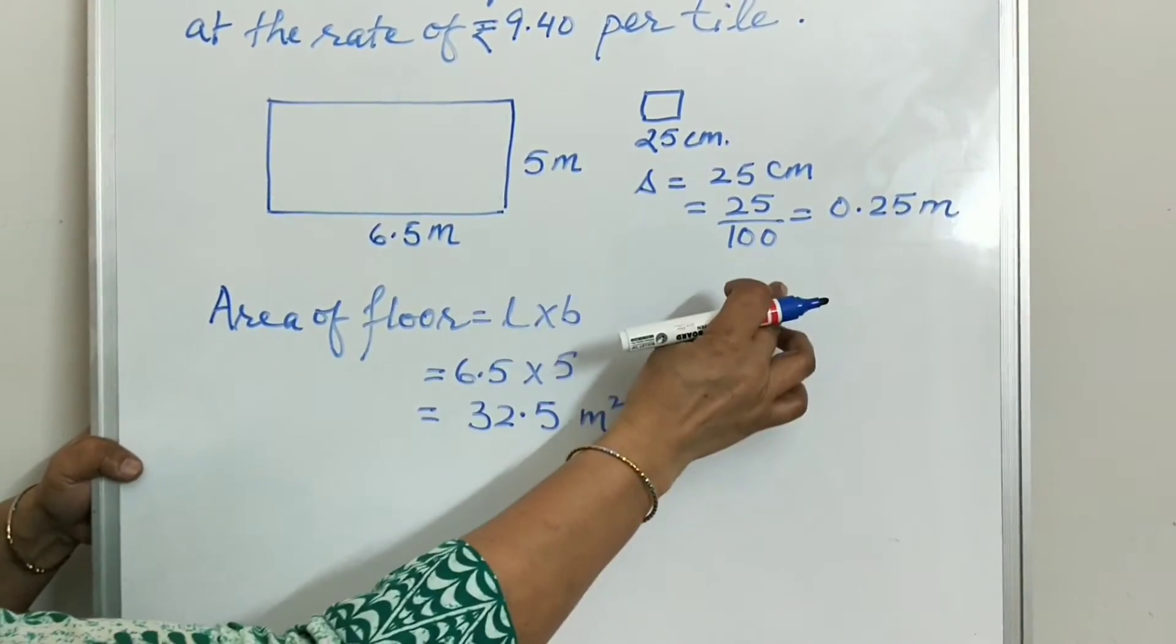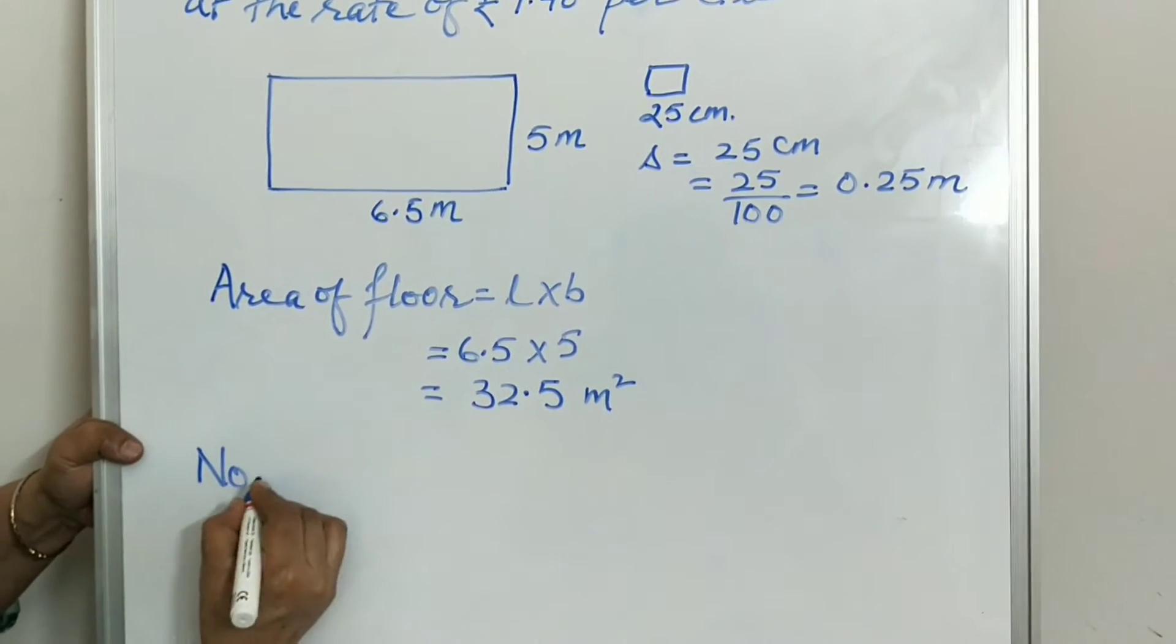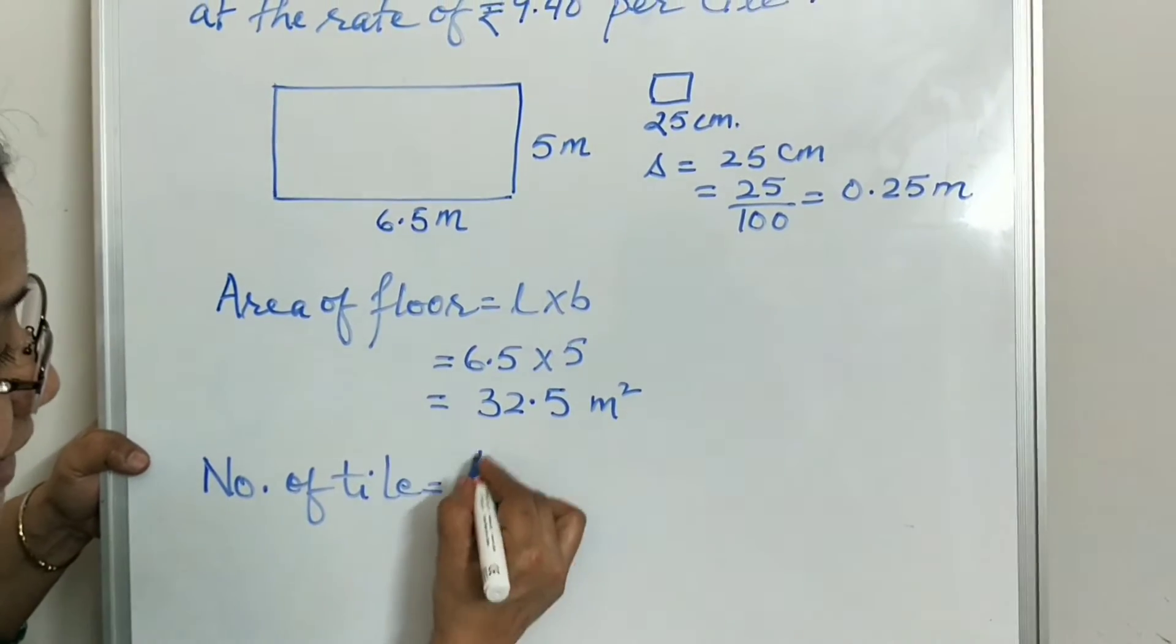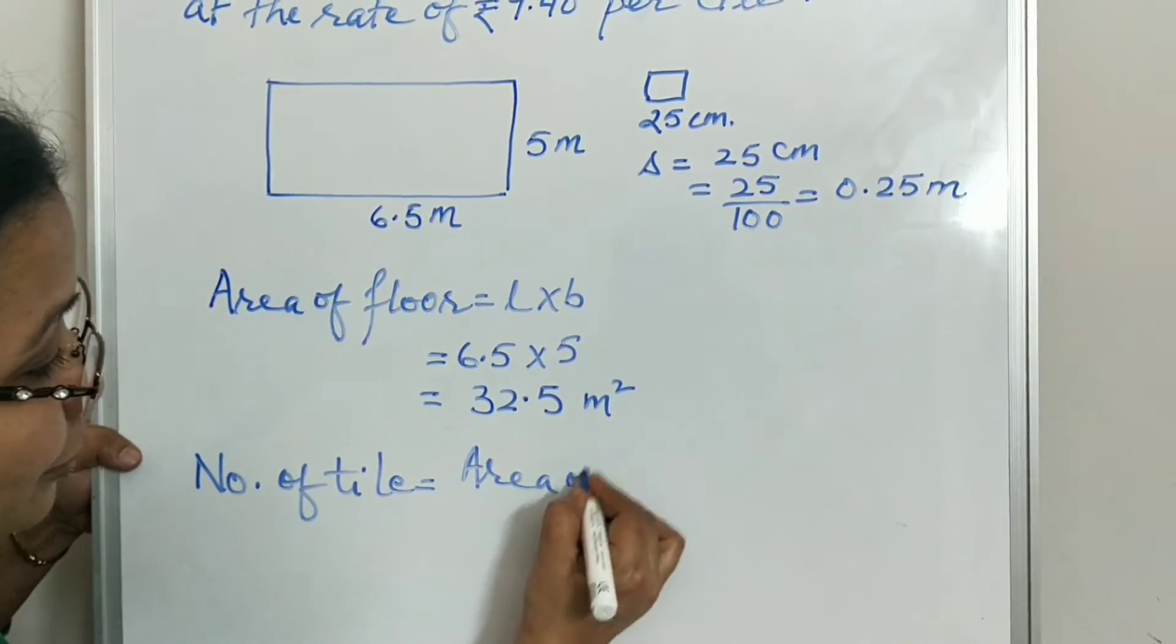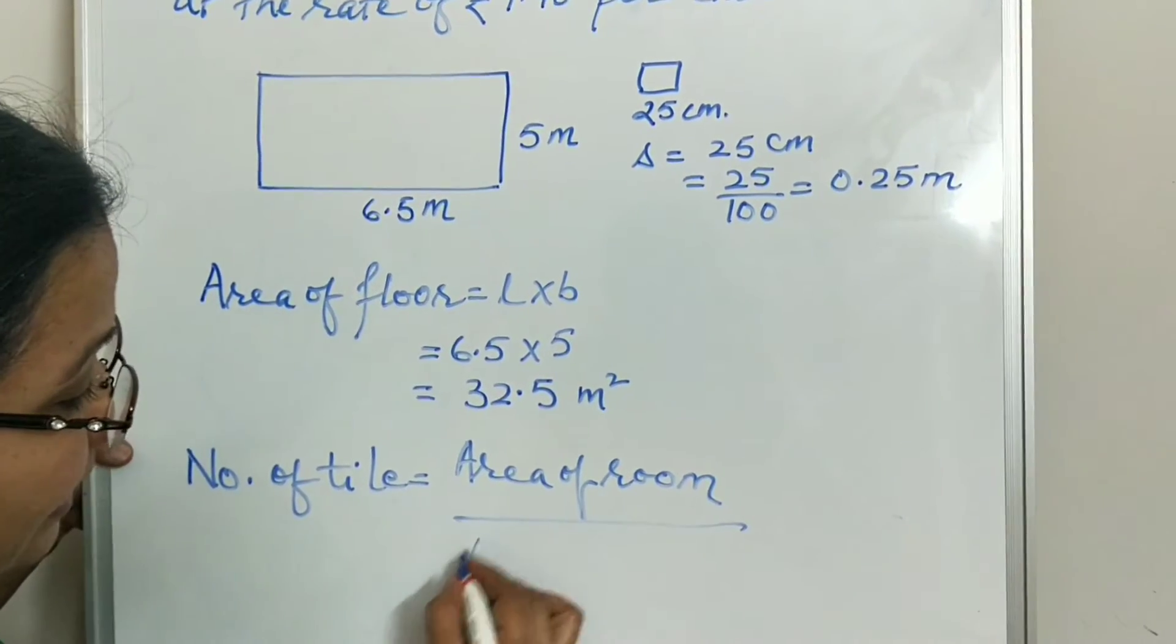We have converted the square's side to meters. So for number of tiles, what will we do? Number of tiles will be area of room upon area of tile.